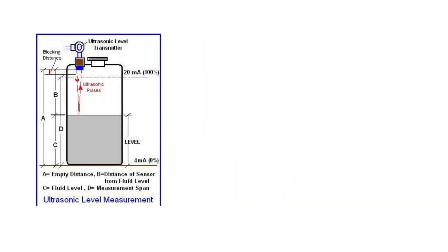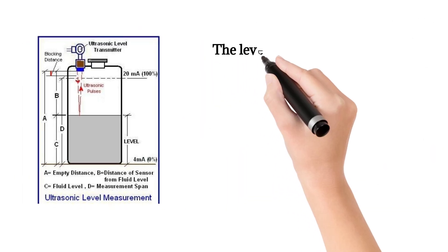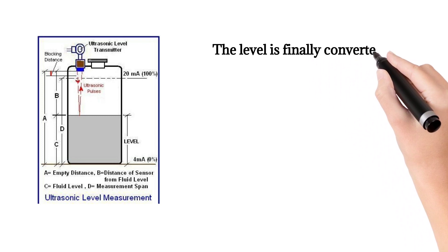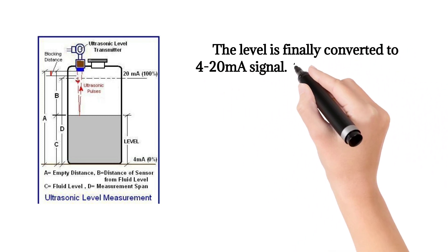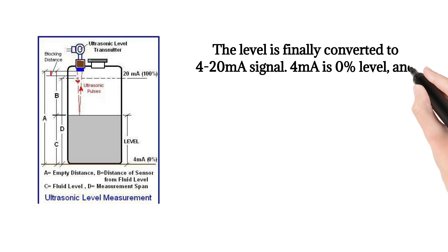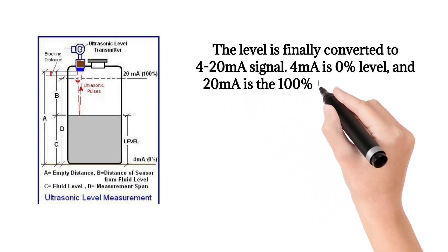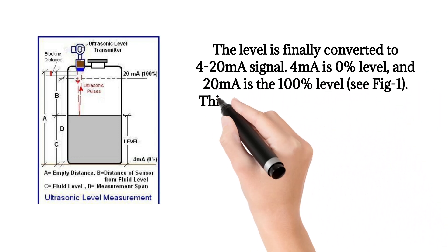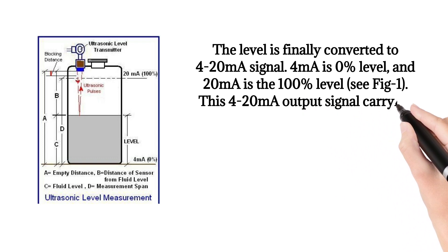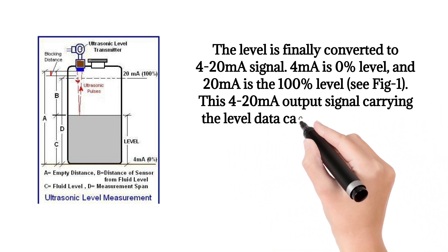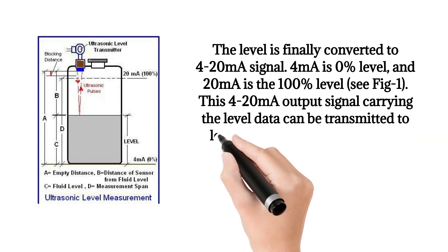The level is finally converted to 4 to 20 mA signal. 4 mA is 0% level, and 20 mA is the 100% level. See Figure 1. This 4 to 20 mA output signal carrying the level data can be transmitted to long distances to process control instruments.